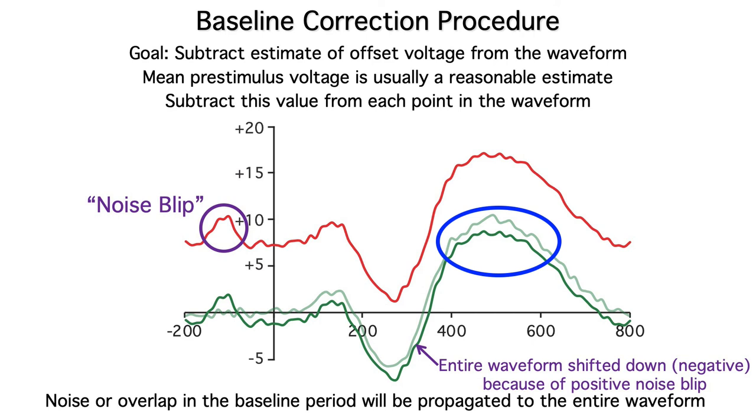So, when you're looking at ERP waveforms, even after averaging, if you see a lot of noise in the baseline period, that noise will have a big impact on the amplitude measures in the post-stimulus period.